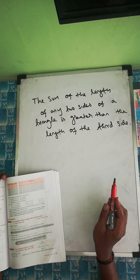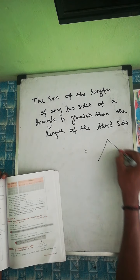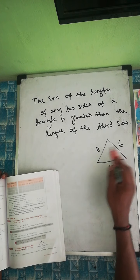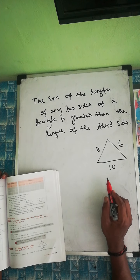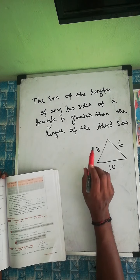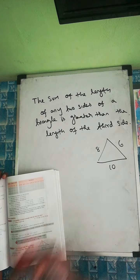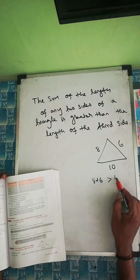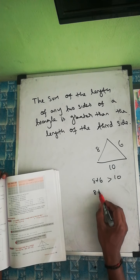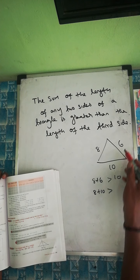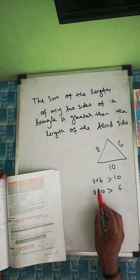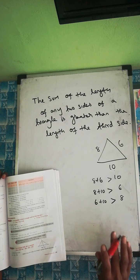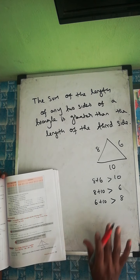For example, take a triangle with sides 10, 8, and 6. If you add 8 plus 6, that's 14, which is greater than 10. Then 8 plus 10 is 18, which is greater than 6. And 6 plus 10 is 16, which is greater than 8. If all combinations satisfy this, it is a valid triangle; otherwise you cannot draw the triangle.